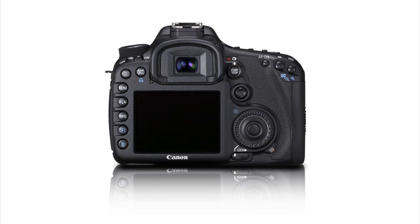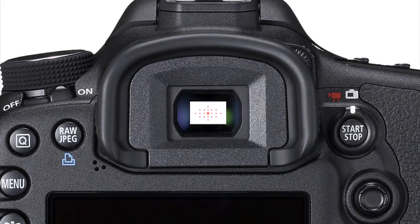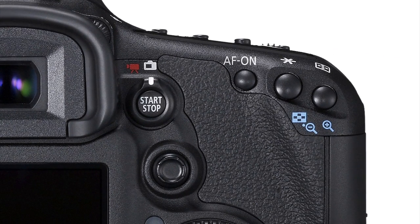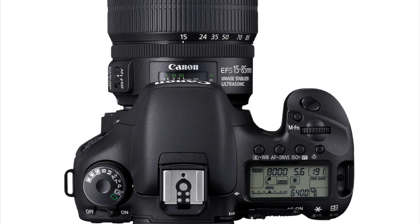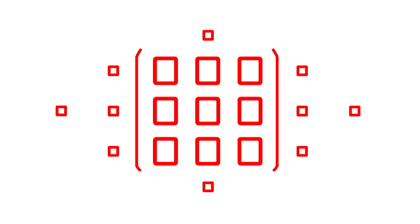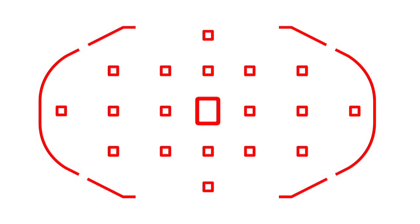Set AI Servo AF and select a starting point for tracking a moving subject with Automatic Point Selection. Press the Focus Point Selector button, and then press the Multi-Function button next to the Shutter button. Each time you press it, you'll move from one AF area mode to another. Automatic AF selection is indicated by the outer brackets surrounding all 19 focusing points.